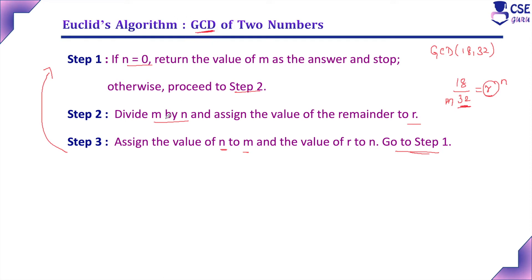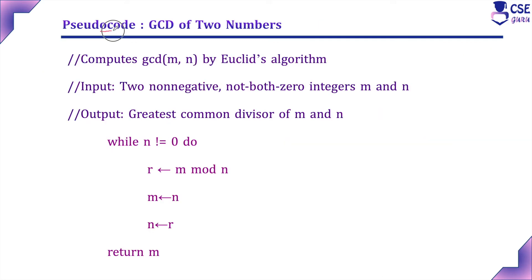This is Euclid's algorithm — a complete explanation to solve the GCD of two numbers, but with no specific mathematical logic shown. Now let's see how the same algorithm is implemented as pseudocode. In pseudocode, the first step always includes the problem statement: here, it computes GCD of M and N using Euclid's algorithm.